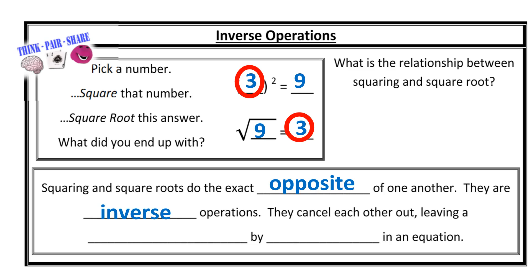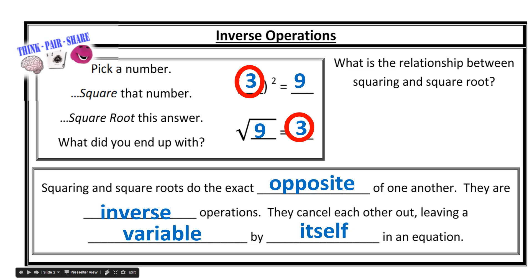They cancel each other out, leaving a variable by itself in an equation. We use simpler words like 'cancel,' but what we're really doing is finding the identity. And since squaring is related to multiplication, it's the same identity: 1.